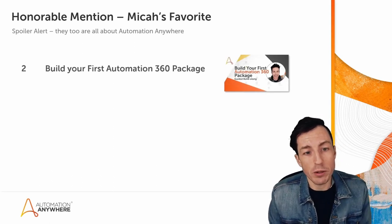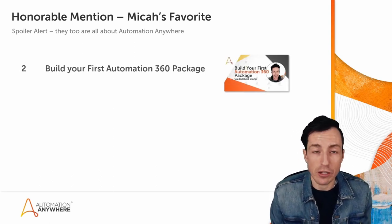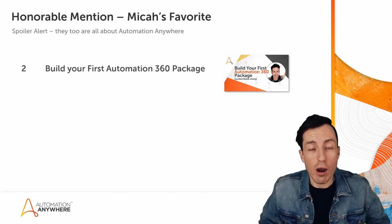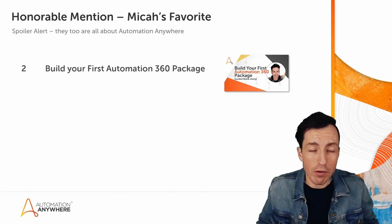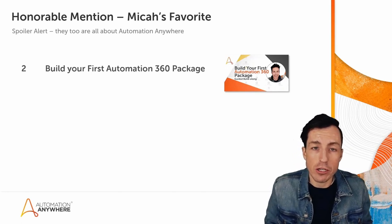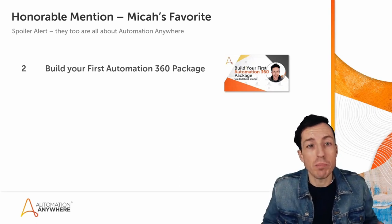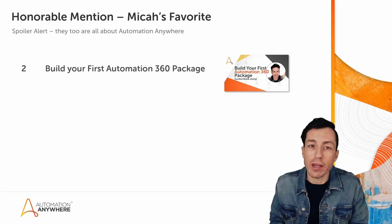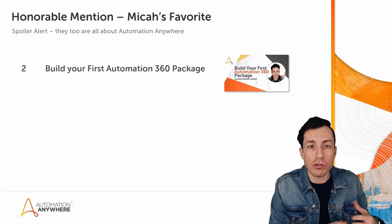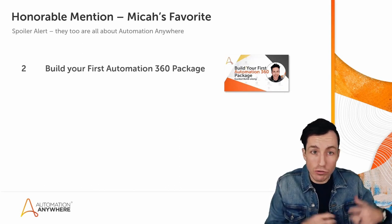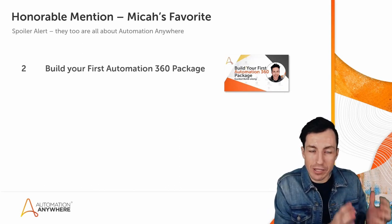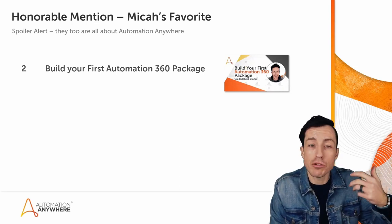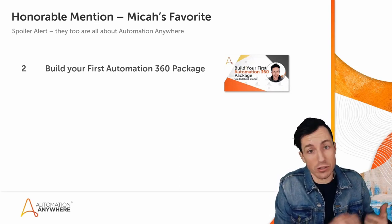The first is Building Your First Automation 360 Package. This is from a live stream where I walked through how to use the Automation 360 SDK to build your own custom package. Custom packages enable you to create your own tool sets that can be added to the left-hand column of the developer interface, and you can create your own custom packages.